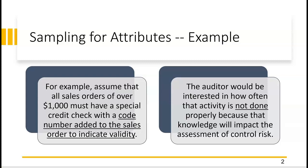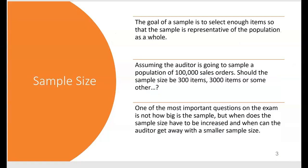The credit manager adds a code number to the sales order if the customer's credit is good. This is important because the company will usually ship out merchandise before they get paid, often giving 30 days to pay with maybe 2% off if paid within 10 days. As long as customers have good credit, there's really no problem — as long as the credit check is performed before the goods are shipped. The auditor wants to test that control to make sure the credit manager is adding a code number, indicating validity whenever sales are over a thousand dollars.